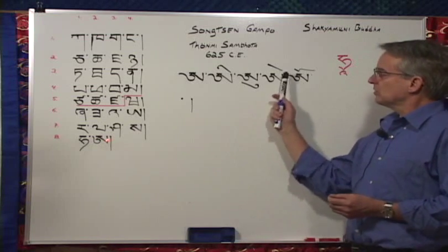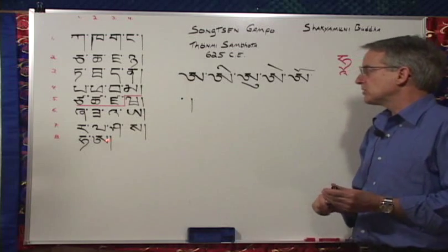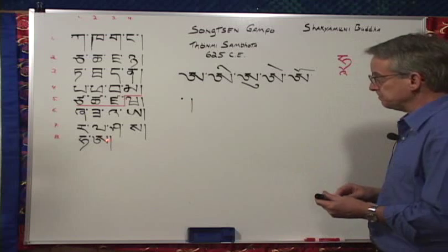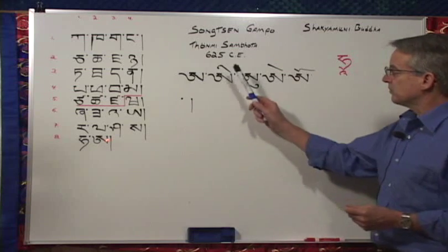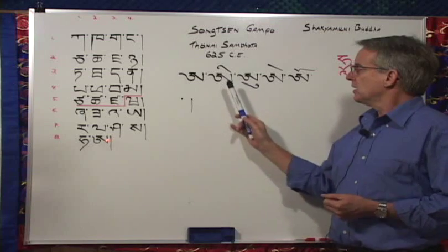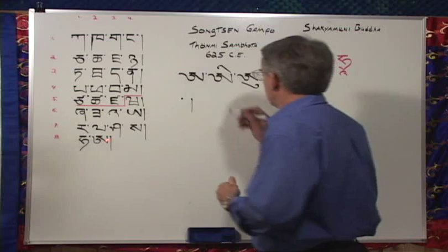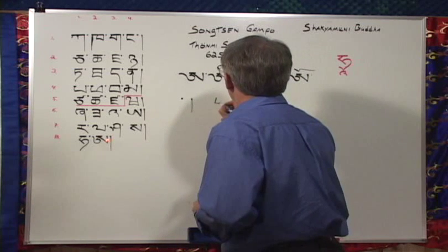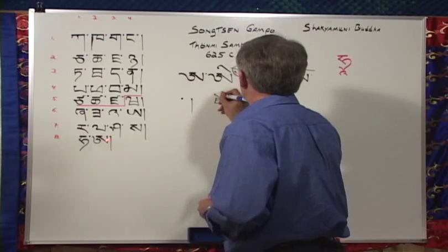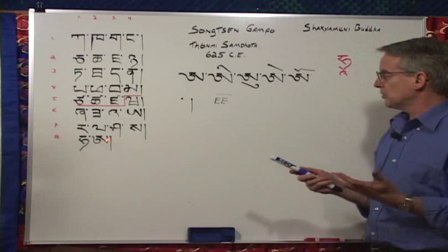Each of the four vowel signs can be put on any one of the 30 consonants. In the level one book, we're on page five. The first vowel sign is called a gi-gu, and it gives the vowel sound ee — as in me, we, or see.